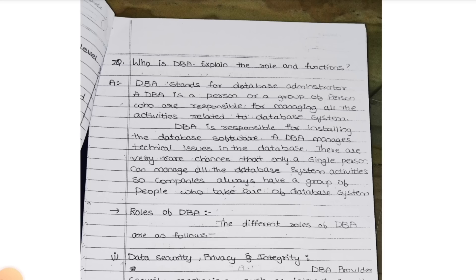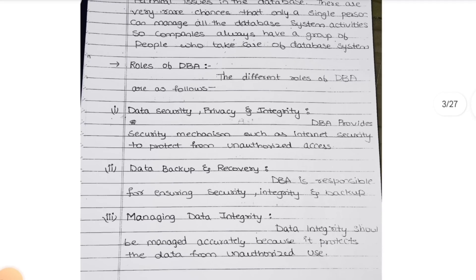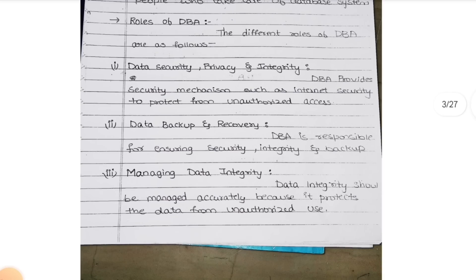This is the introduction of database administrator. What are his roles - what he needs to do as a database administrator? Data security, data privacy, and data integrity. He needs to secure the data, keep it private, and keep integrity. Integrity is nothing but correctness. Responsibilities - roles is nothing about the responsibilities of a DBA. Next, database backup and recovery: if data is lost, he is the responsible person who needs to backup the data and recover it.